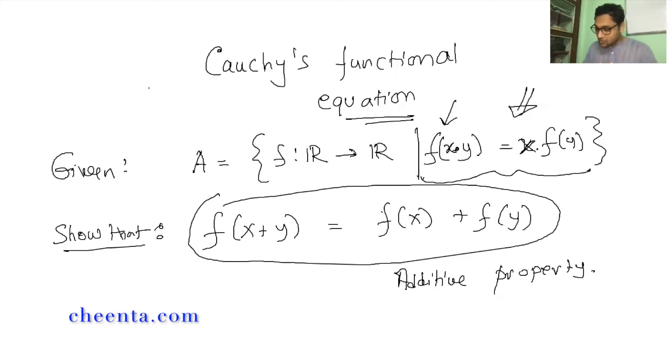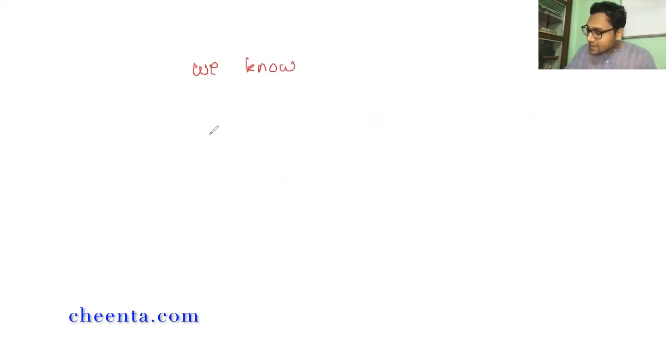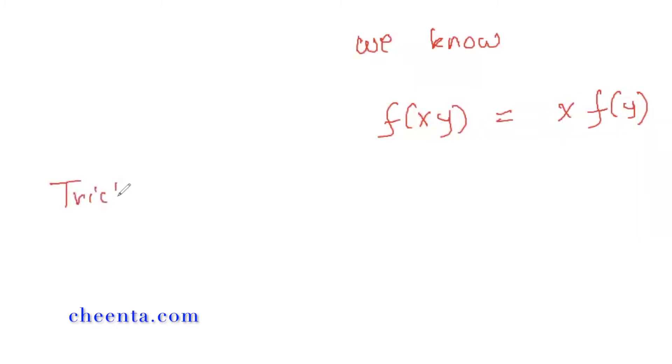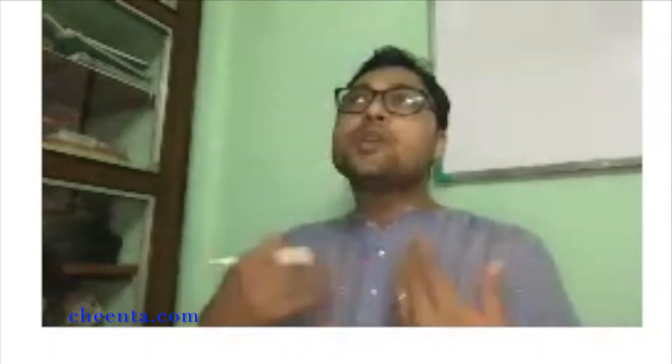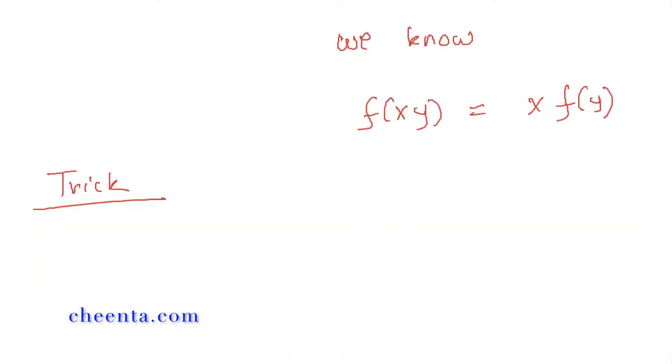This is a very simple problem — it's not actually hard. We know that f(xy) = x·f(y). A common trick or strategy to solve functional equation problems is to try to find particular values of the function. Sometimes it's really easy to find some values. For example, you might want to know: what if the input is zero? I'll demonstrate this for this particular functional equation.